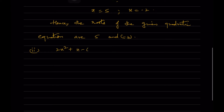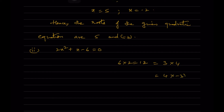Here we have 6 × 2 = 12, and -12 can be written as 4 × (-3). Since b = 1, comparing with the general form ax² + bx + c = 0 where a = 2, b = 1, c = -6, we can write b = 4 - 3.